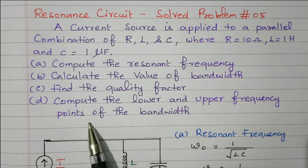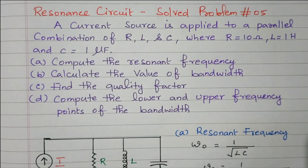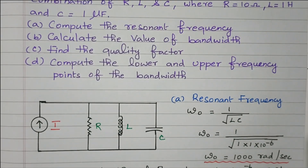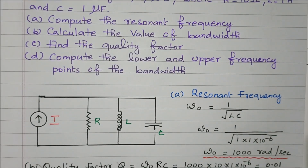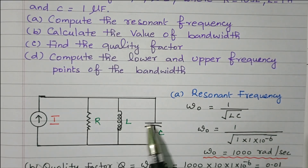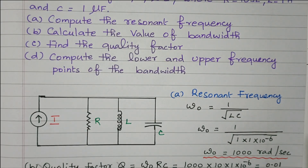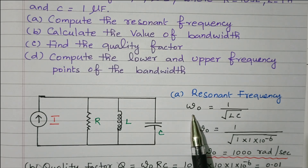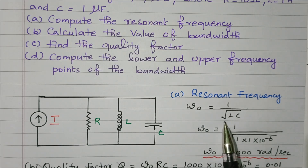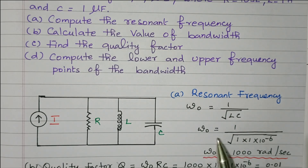Looking at the diagram, this is the parallel RLC circuit — R, L, and C are all connected in parallel in three branches, with a current source applied. First we'll find the resonant frequency. The formula for resonant frequency omega naught is 1 divided by the square root of L times C.